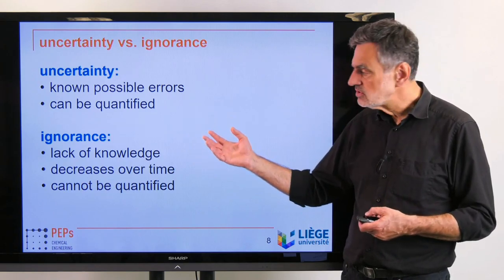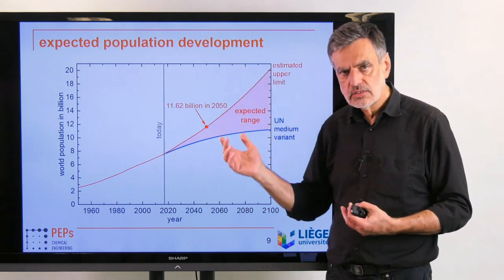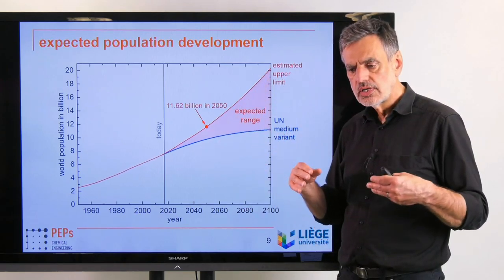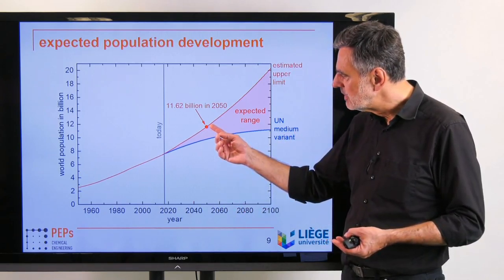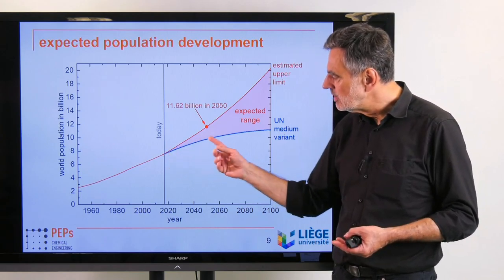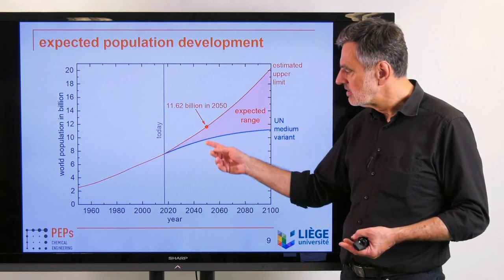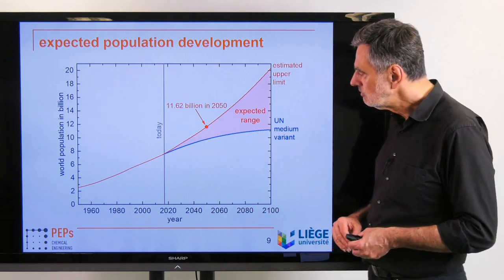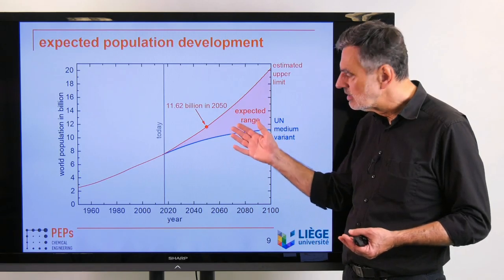We can get some idea of the order of magnitude of ignorance from such a meta-study. In previous UN estimates, child mortality was underestimated, population growth in sub-Saharan countries was underestimated, and the effect of AIDS was overestimated. Since we now know those turned out differently, we gained knowledge — but it is not certain that this trend will not continue, and we may always realize new effects that shift world population expectations higher.